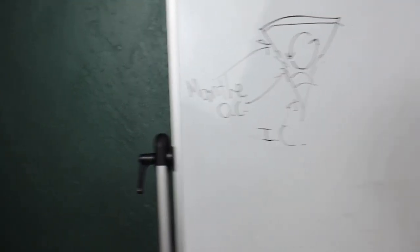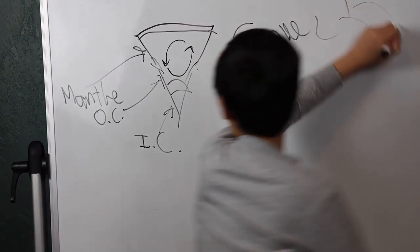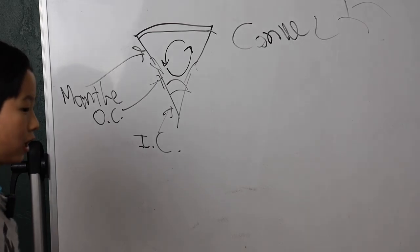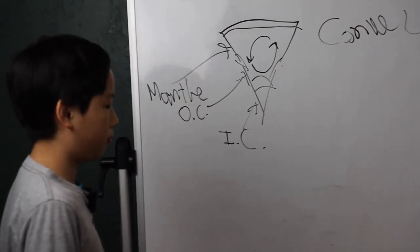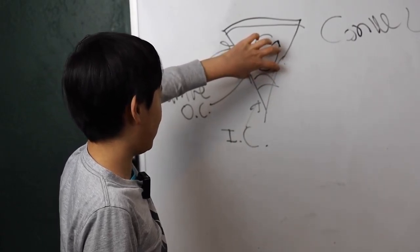So, how do convection currents work? When hot magma nears the core, it becomes even hotter.